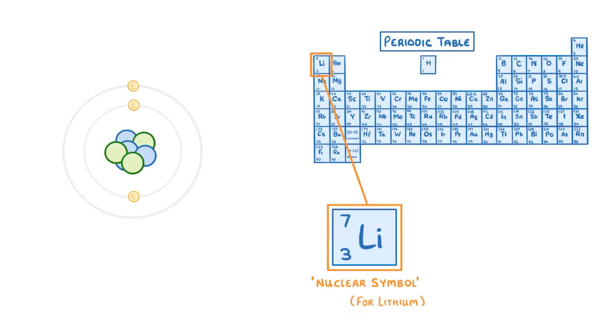Inside the box is all the important information that you need to know about that element. On the right we have the elemental symbol, which represents the element, so Li for lithium.